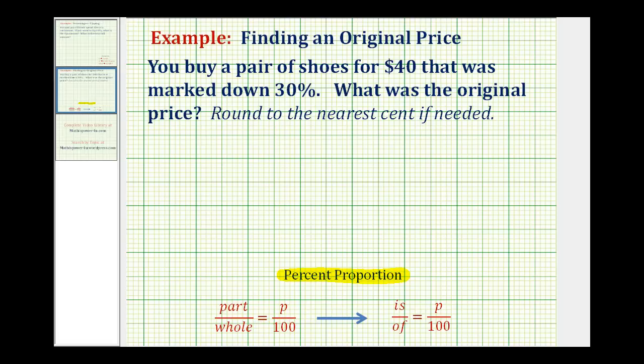So for our proportion, the first ratio is going to compare the discounted price to the original price, which we can think of as the ratio of the part to the whole.